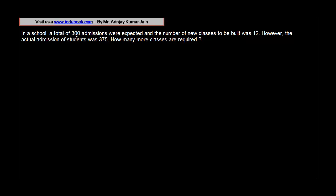In a school, a total of 300 admissions were expected. So there's a new session going on in a school. Let's call this the school. A total of 300 admissions were expected, so let's say there is one variable - the students which are expected. We are told that 300 students were expected.